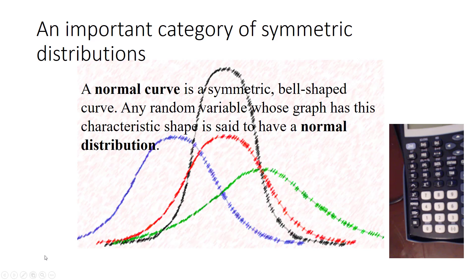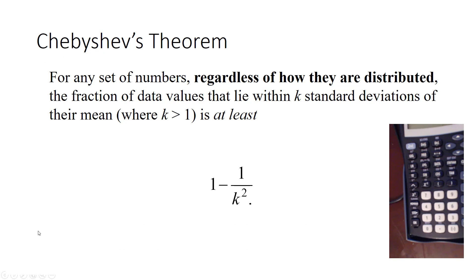An important category of symmetric distributions are normal distributions. When you see a bell shape like these sketches here, when the data looks like it's distributed in this way, it's often normal distribution, a distribution that gives us a lot of power for what we know about the set. But Chebyshev's theorem actually talks about something we know about all sets regardless of how they are distributed. That's the power of Chebyshev's theorem.